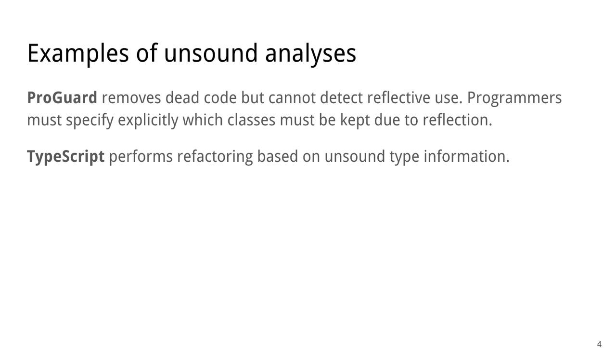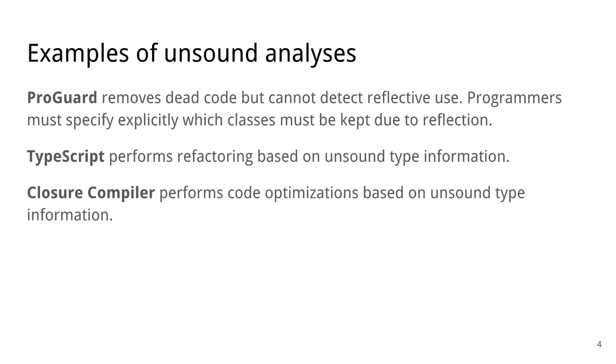And last, it is the tool that I'm working on at Google called Closure Compiler. And Closure Compiler is a JavaScript type checker like TypeScript, but is also an optimizer. And our type system is unsound, but we do have optimization passes that use type information. So if the type information is incorrect, these passes may break the code.